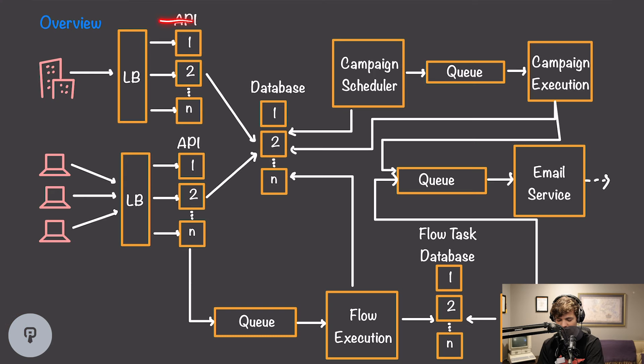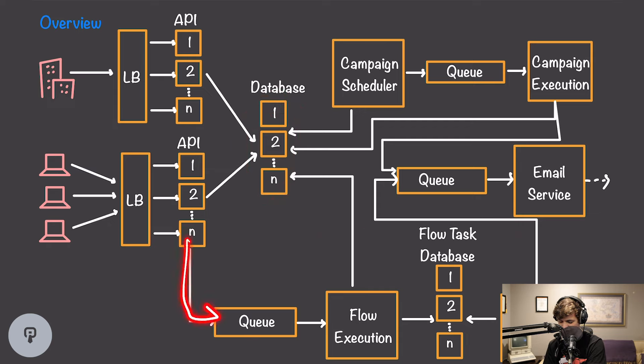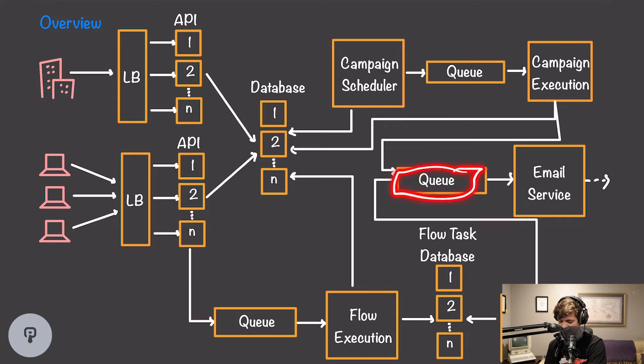Let's take a look at the entire system as a whole. We have our private API and public API both writing data to our database. We have a campaign scheduling system that reads from the database and sends campaigns to our email service. We have a flow execution service triggered by events from the public API, also sending emails to the email service. Emails wait in a queue before being sent, and the email service uses SMTP to send them out. This ended up being a very complex system for a relatively simple business problem, which shows how complex systems get when handling such large amounts of load. There's also a lot more functionality that could be added as a further exercise.